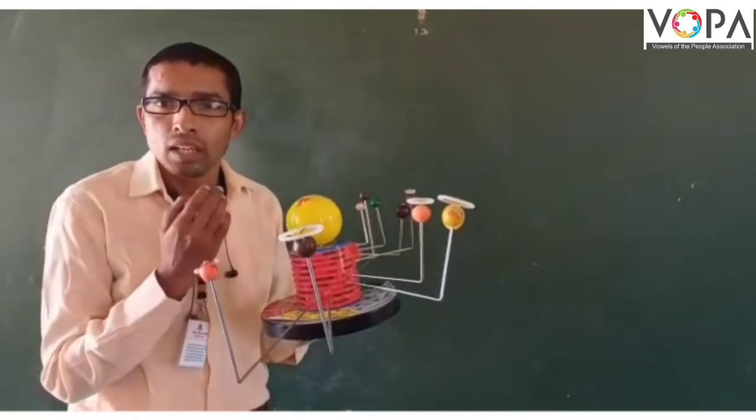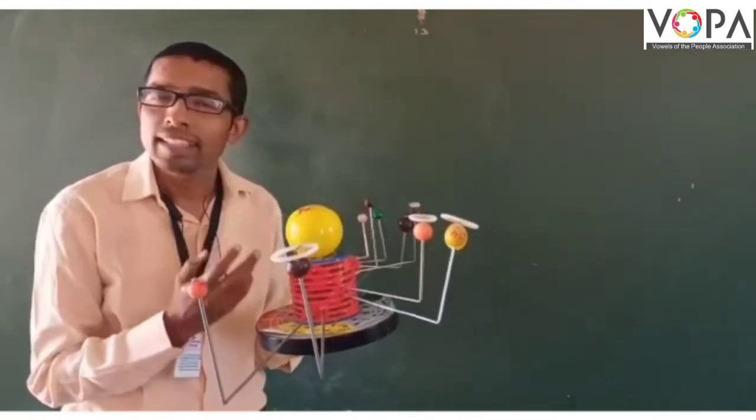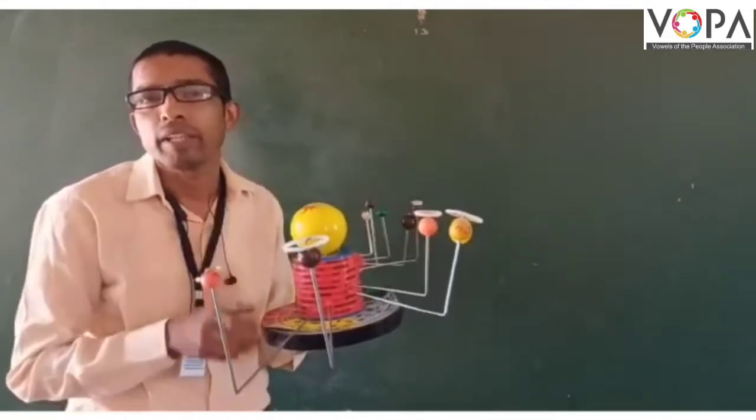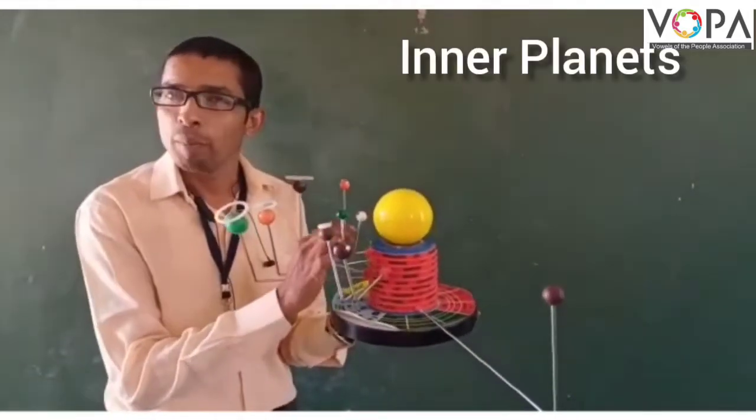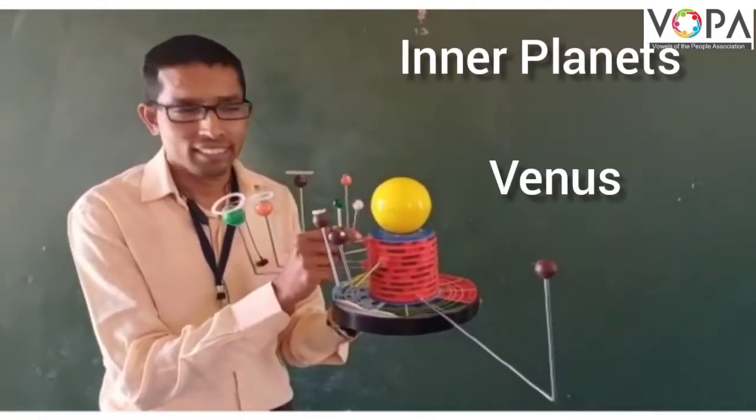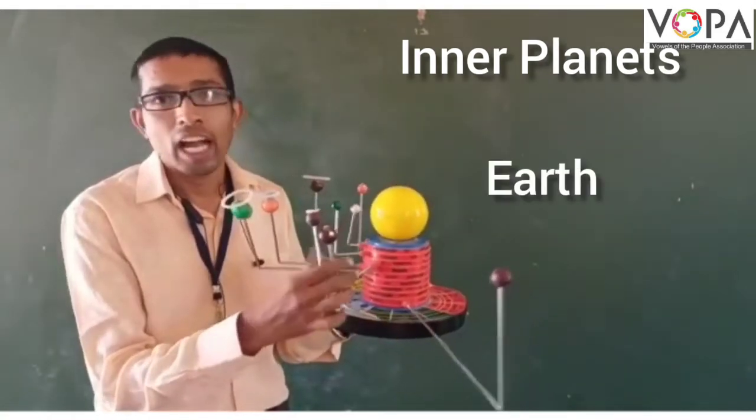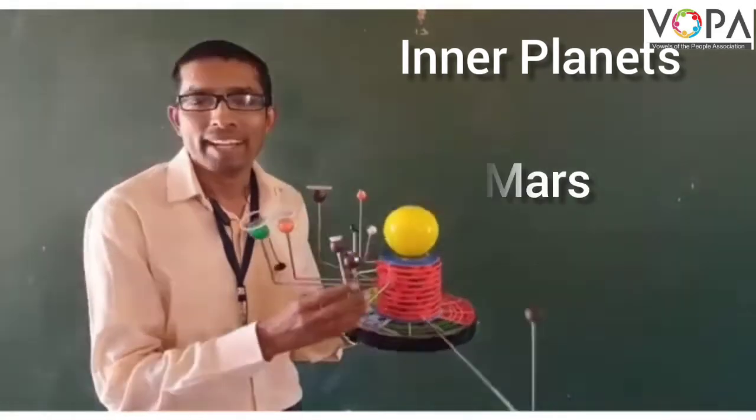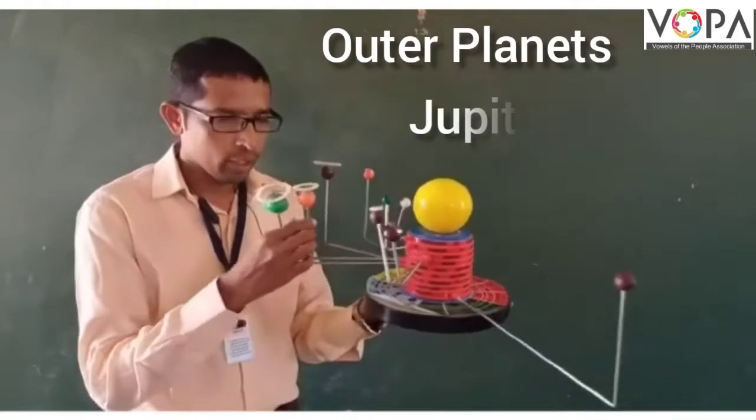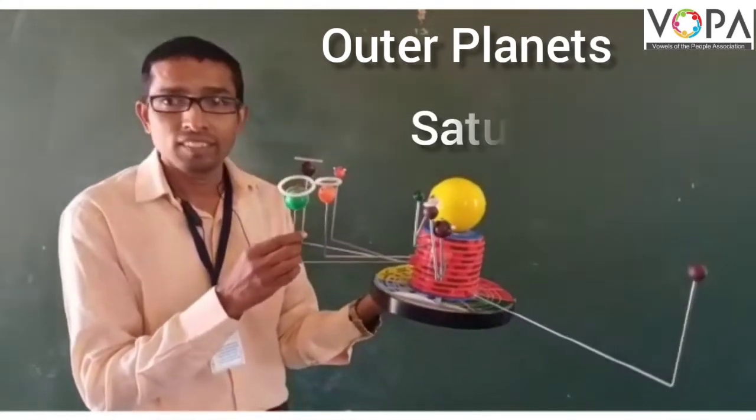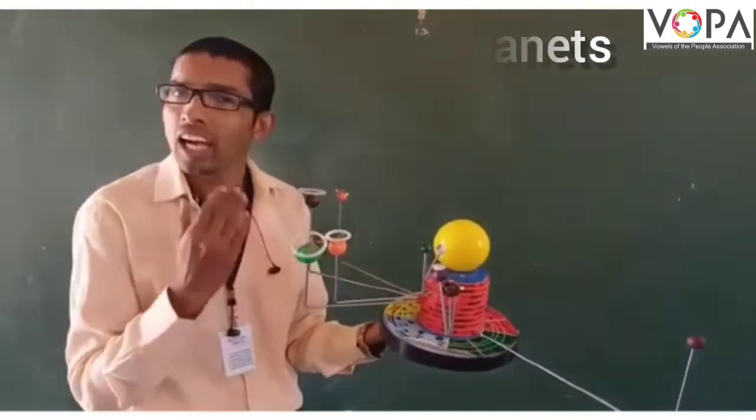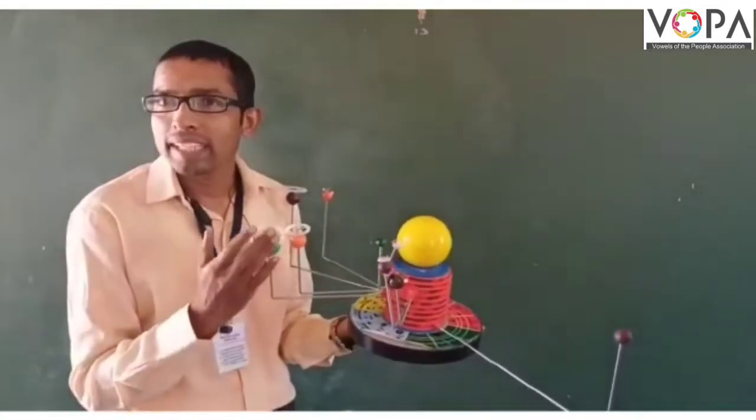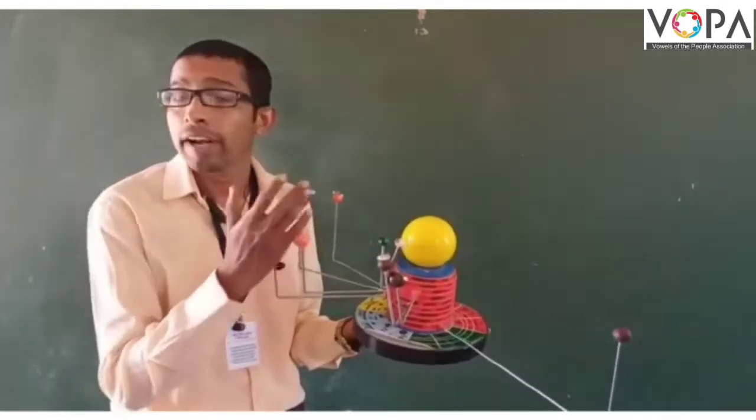The Sun rotates around the center of our Milky Way. Observe that Mercury, Venus, Earth, and Mars are the inner planets. Jupiter, Saturn, Uranus, and Neptune are the outer planets. The outer planets have rings.